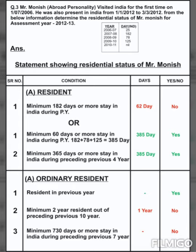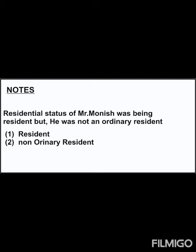After that, in the notes section, we write: the residential status of Mr. Monish is 'being resident,' because the resident conditions were fulfilled. However, he was not an ordinary resident, because for ordinary resident all three conditions must be fulfilled, and none of them were satisfied. So the person was not an ordinary resident.